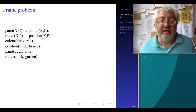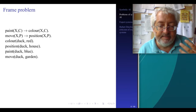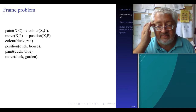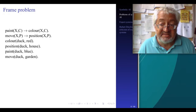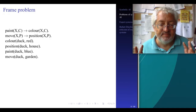Another problem is what is called the frame problem of AI. The frame problem is about this: suppose I define paint in a rule-based, Prolog-based system. If I paint X with a color C, then the color of X is going to be C. If I move X to position P, then the position of X will be P. This makes sense — it's what painting and moving mean. Now I have some statements describing the state of the world: the color of the duck is red, the position of the duck is in the house.